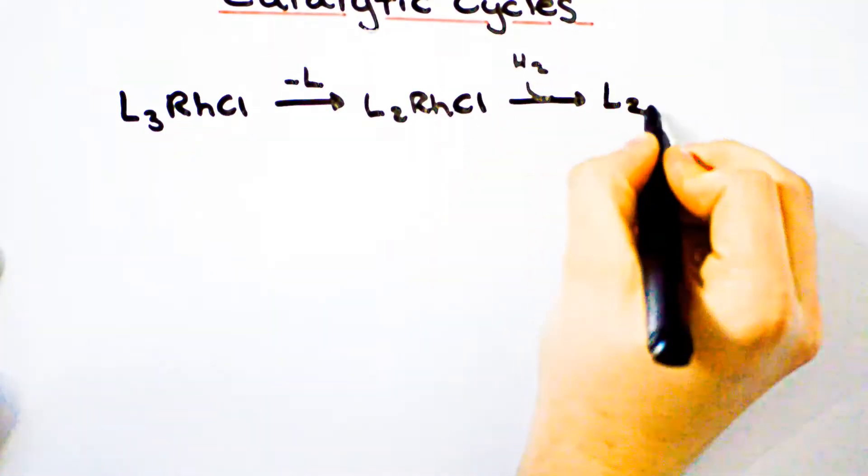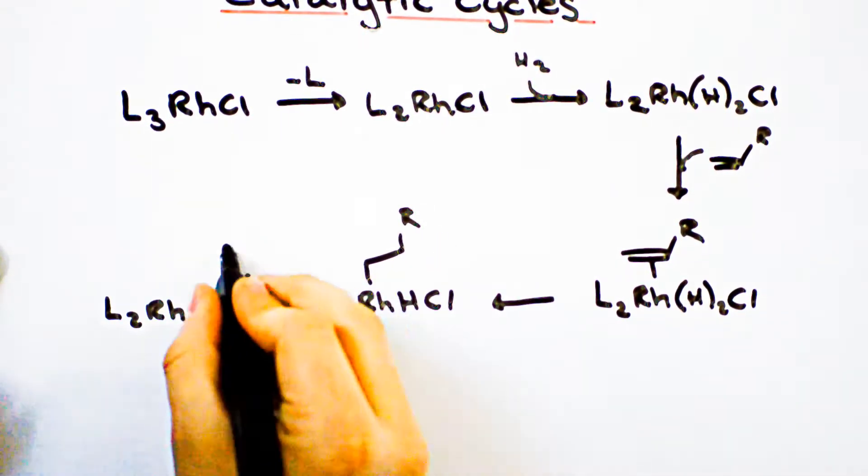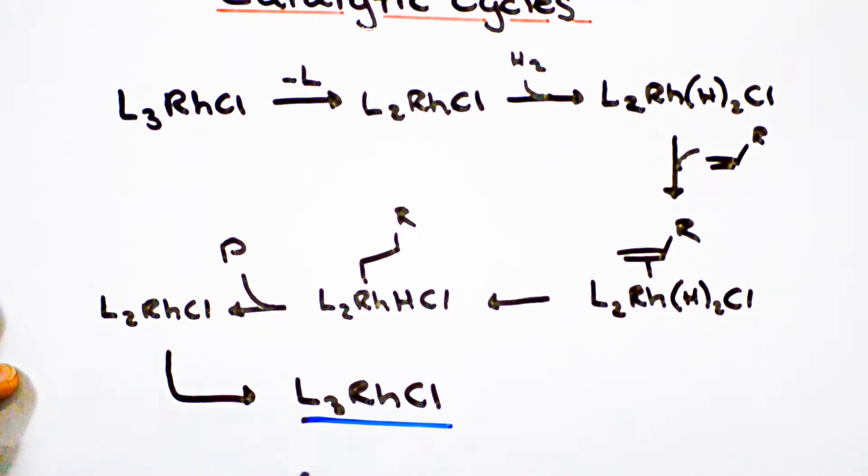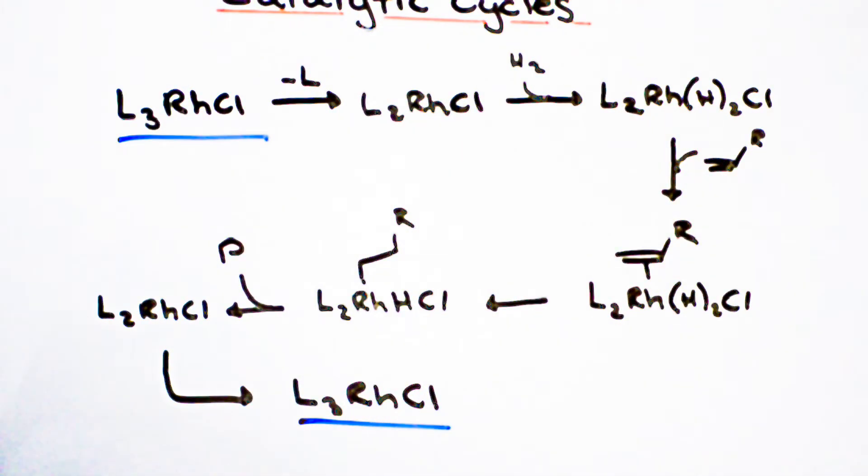So let's look at the mechanism of the catalyst. As you can see, the catalyst undergoes a series of transformations and is regenerated at the end of the reaction. The mechanism, although not incorrect, can be better presented with the use of a catalytic cycle.